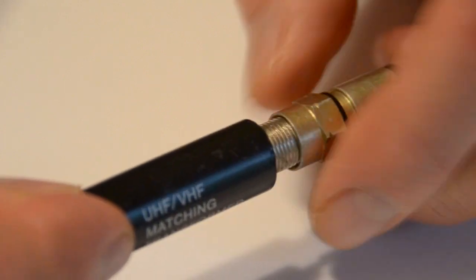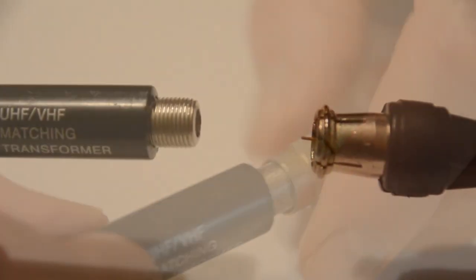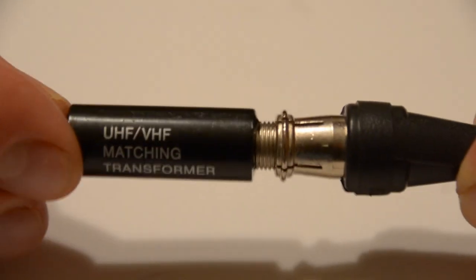The twist-on connector simply threads onto the balun or plug. The push-on connector simply slides on.